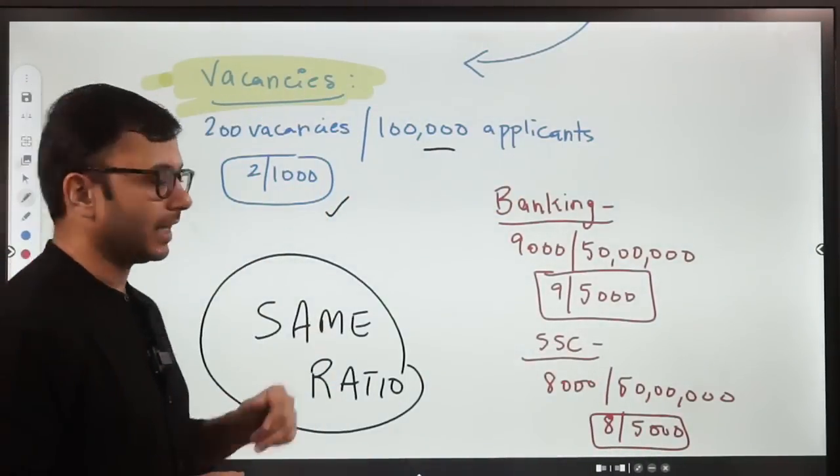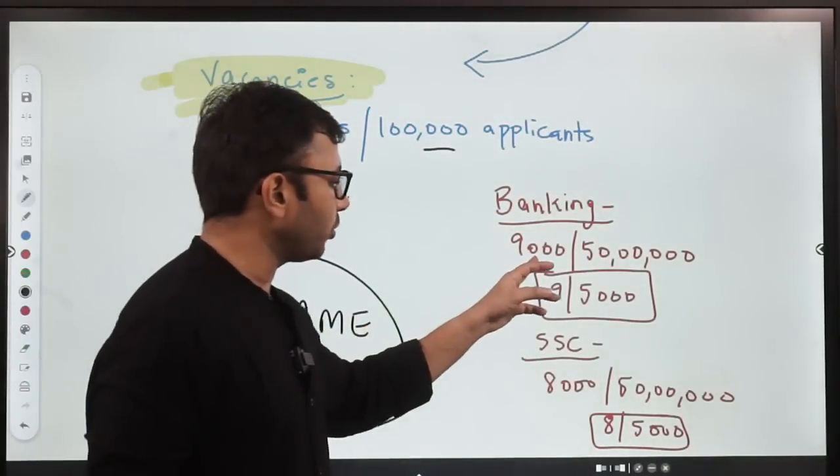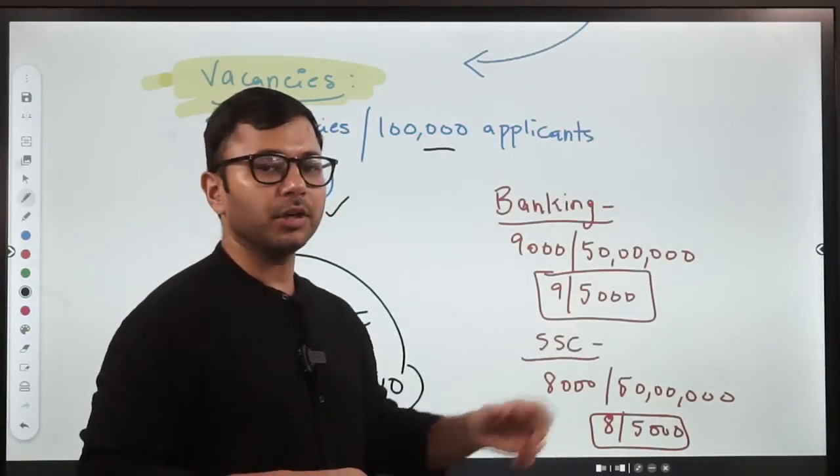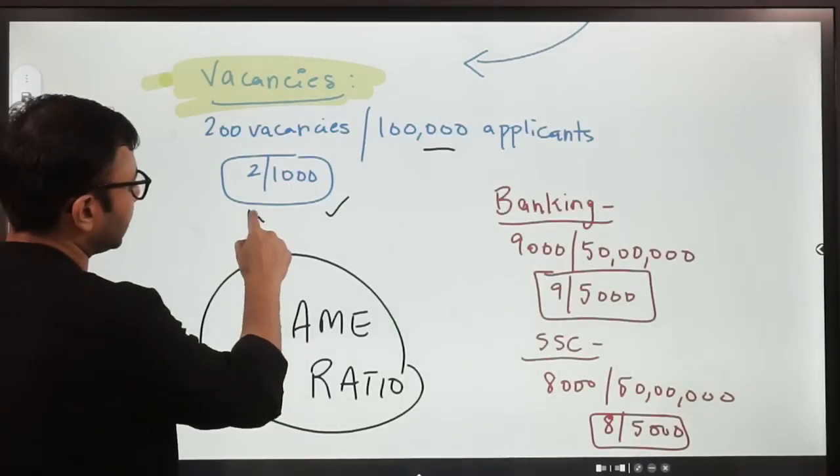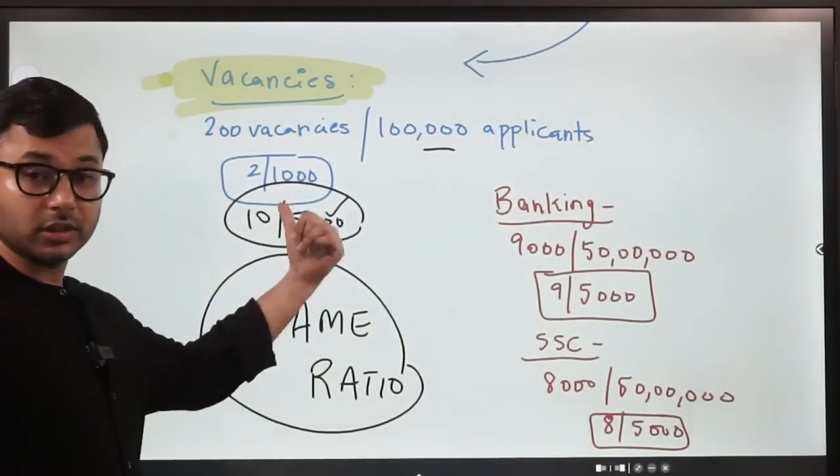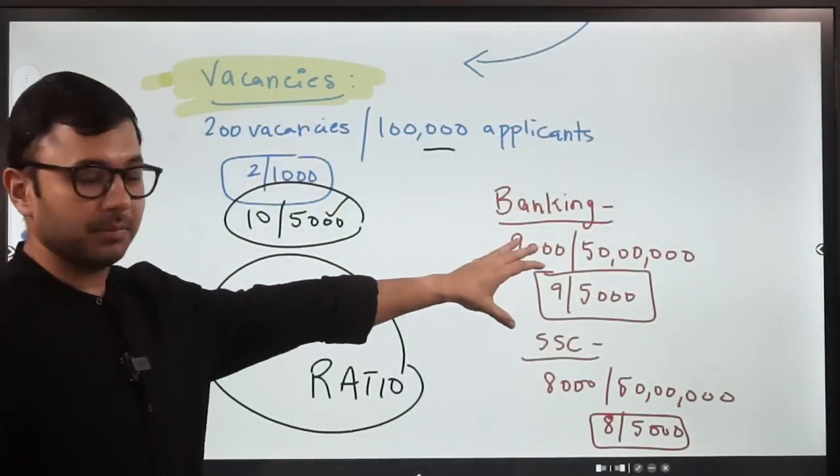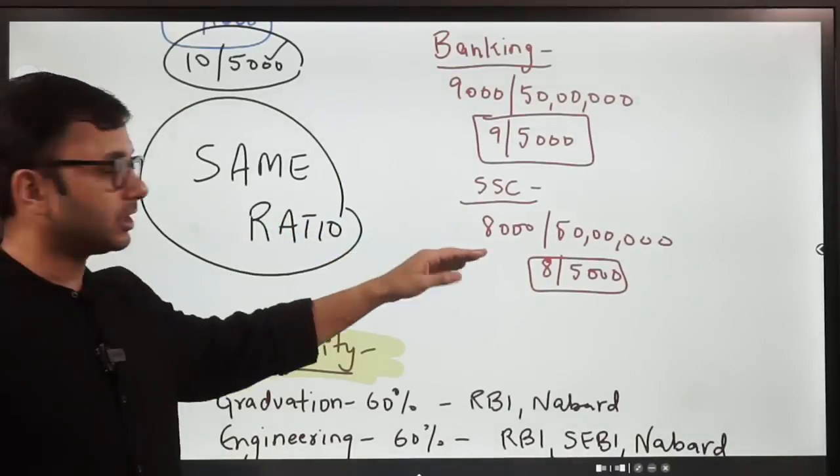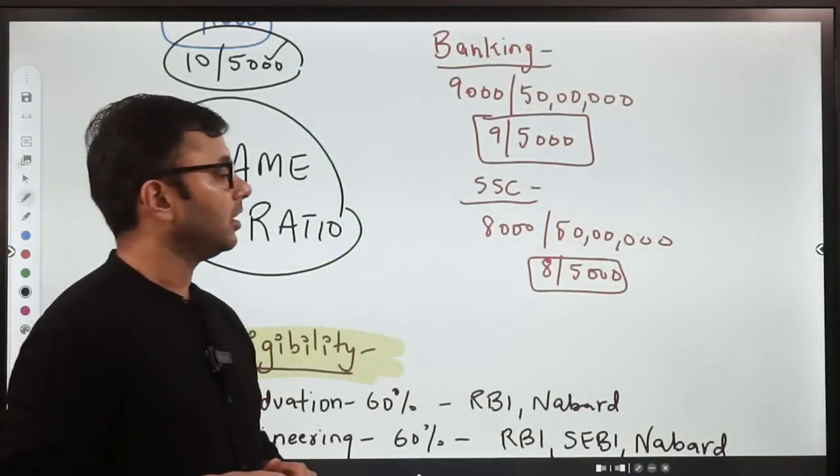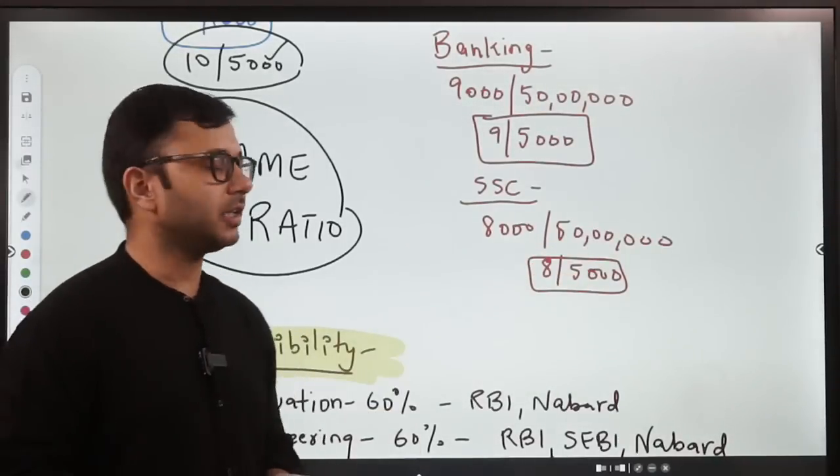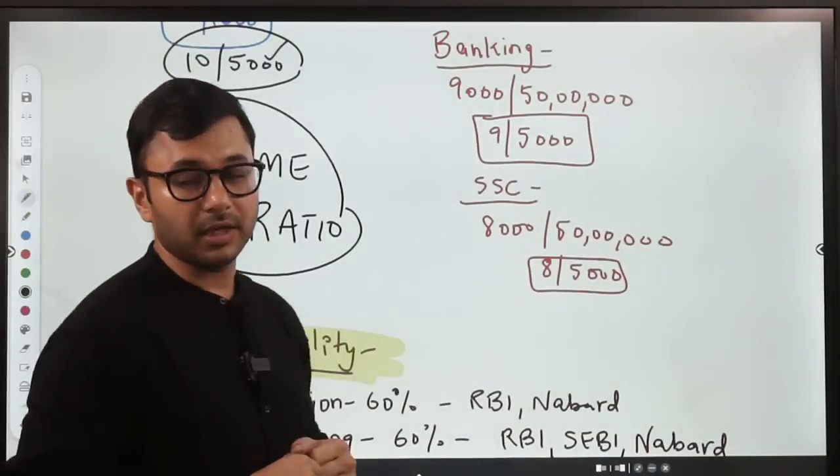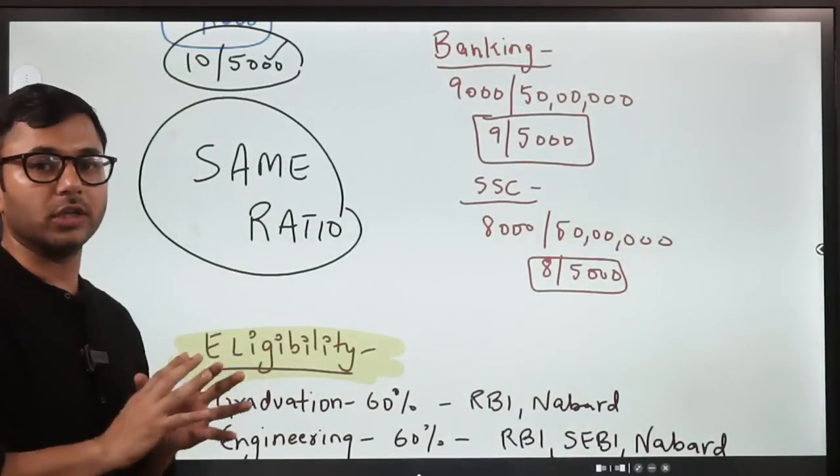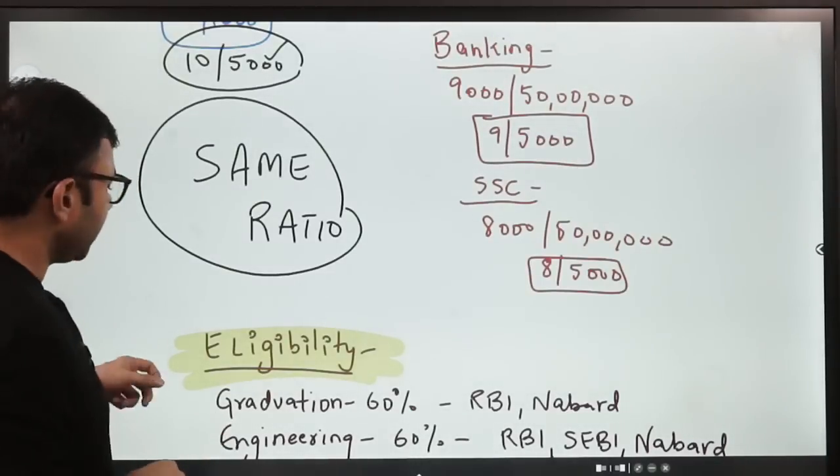Now, we can compare this to SSC and Banking. If we look at Banking, in 2021, there were 9,000 vacancies approximately and 50,000 applicants applied for the examination. That means 9 per 5,000 applicants, which is almost the same as this. If we pick up SSC, then we will see that 8,000 applications for 50,000 applicants means 8 vacancies per 5,000 applicants, which is very similar to RBI or SEBI and NABARD. This is the ratio of vacancies. And here we know that vacancies are good. It seems less than the number of applicants, but the number of applicants are also comparatively very less.